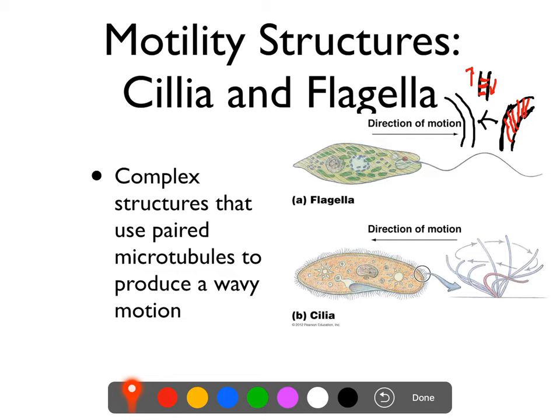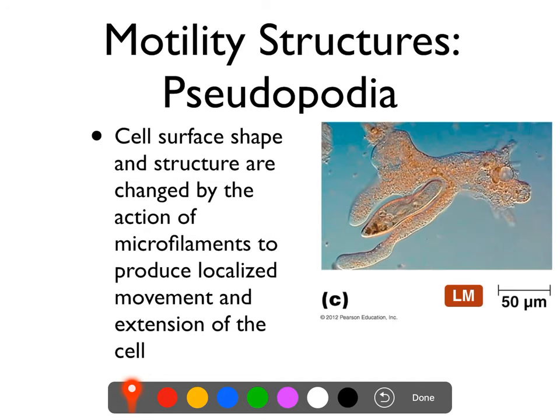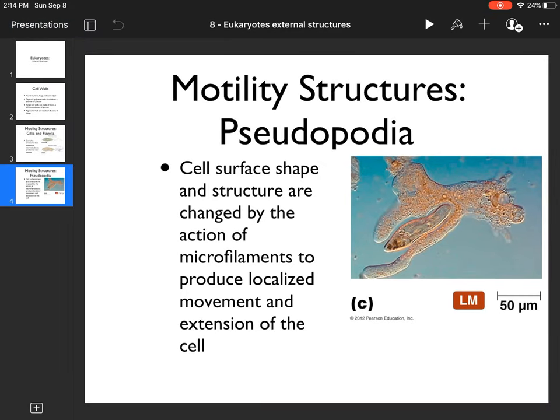Now, there is a third method of eukaryotic motility called pseudopods. But pseudopods are not controlled by external structures — they're controlled by basically changing where the cell is. There's not so much pushing itself through the water as kind of crawling along its own feet, so that's not really an external structure. Here you can see some pseudopods — this is an amoeba eating a paramecium. The cell can change its shape by changing how its internal microfilaments are pushing against the cell membrane to extend itself along various pathways. And that's it — that's what I have to talk about for eukaryotic external structures.